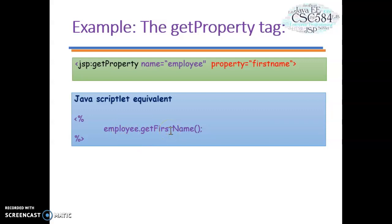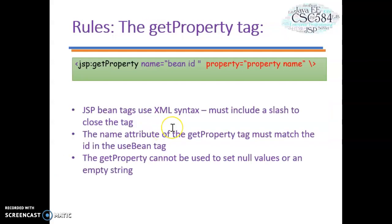For getProperty, there are also a few rules. JSP bean tags use XML syntax — you must include a slash to close the tag. The name attribute of the getProperty tag must match the ID in the useBean tag, and the getProperty tag cannot be used to set null values or an empty string.